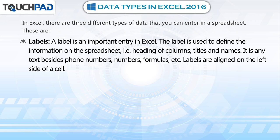These are labels. A label is an important entry in Excel. The label is used to define the information on the spreadsheet, that is, heading of columns, titles and names. It is any text besides phone numbers, numbers, formulas, etc. Labels are aligned on the left side of a cell.